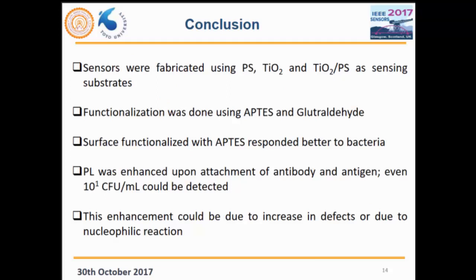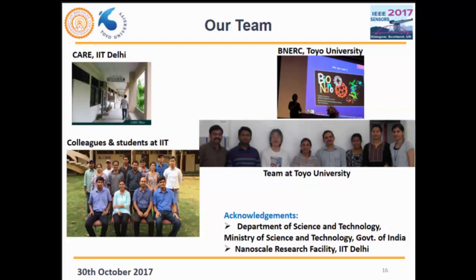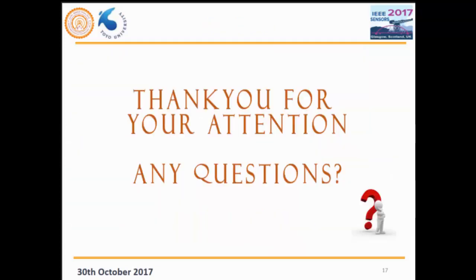To conclude: we prepared samples with different substrates — porous silicon, TiO2, and a heterostructure. Functionalization was done using both APTES and glutaraldehyde; however, it was observed that APTES alone was sufficient to give a good PL signal. PL was enhanced upon attachment of antibody and antigen, and detection down to 10¹ CFU/mL could be achieved. This enhancement is thought to be due to increasing defects or a nucleophilic reaction taking place on the surface. This work was done with a collaborator at Toyo University, Japan. We acknowledge the Government of India for funding this project.